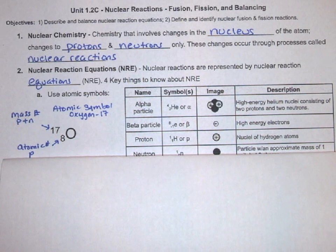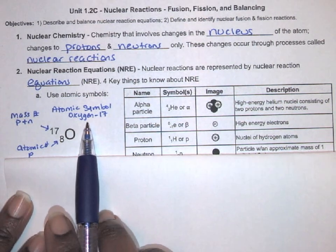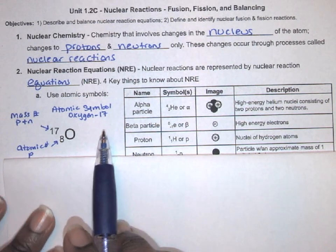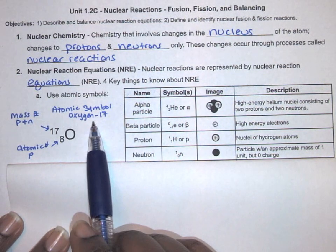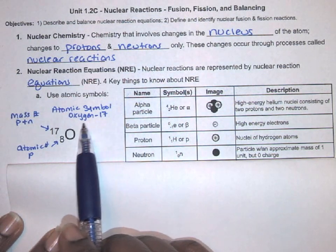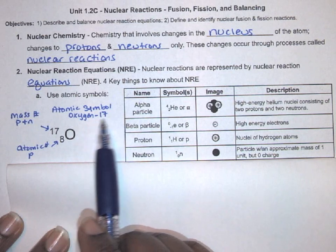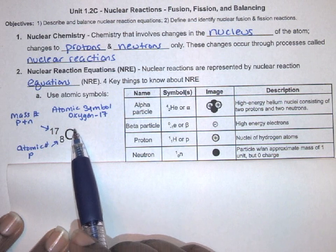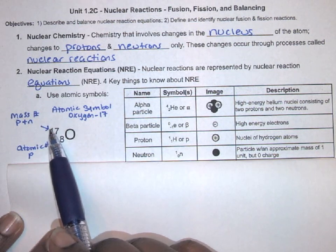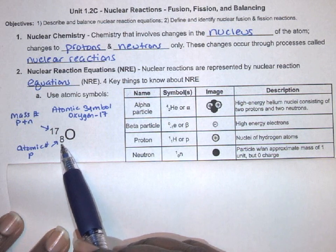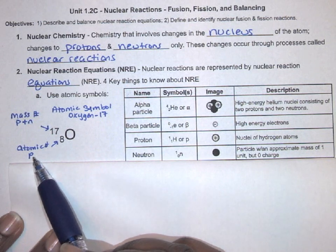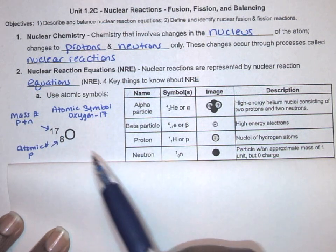In a nuclear reaction equation, you're going to see that we use atomic symbols. Here's an example: we have an atomic symbol for oxygen-17. It's called oxygen-17 because oxygen is the name of the element and the mass number is 17. Remember, in the atomic symbol, on the upper left side, the top number is the mass number—it's the protons plus neutrons. On the bottom left is the atomic number, which is the number of protons. Be sure to copy this information down.